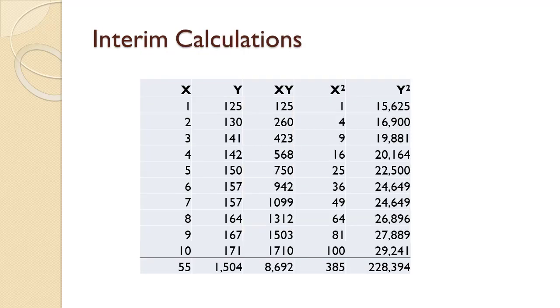We begin by performing some interim calculations. Before we begin, notice that I have renamed the period column X and the actual column Y. That is just to make them consistent with the formulas used for regression. We first calculate X times Y. For period 1, 1 times 125 equals 125. For period 2, 2 times 130 equals 260.